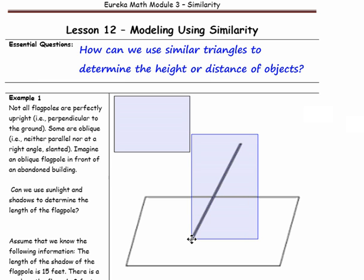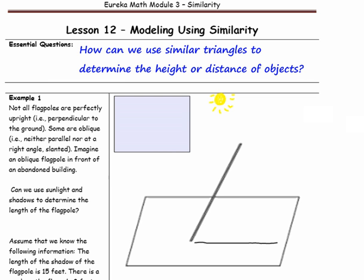So this is our flagpole. Can we use sunlight and shadows to determine the length of the flagpole? Let's draw a sun at the top of your paper and imagine it is casting a shadow along the ground — that's the shadow of the flagpole. The sunlight also creates sunbeams, so let's imagine a sunbeam here.